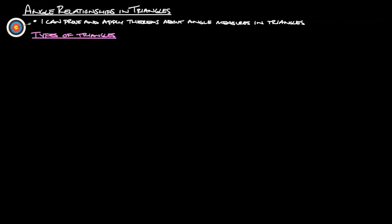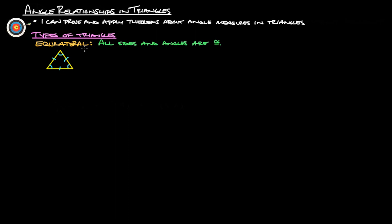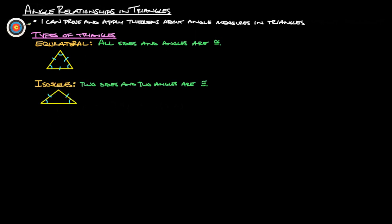First things first, let's look at the different types of triangles that we have. The first one we have is equilateral, which means all sides and all angles are congruent — all the sides are the same, and all the angles are also the same.